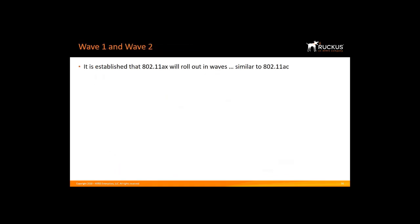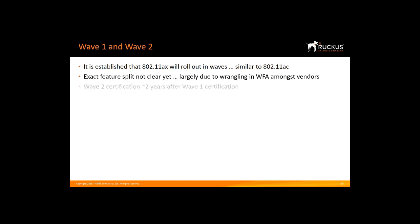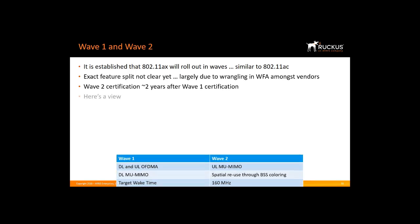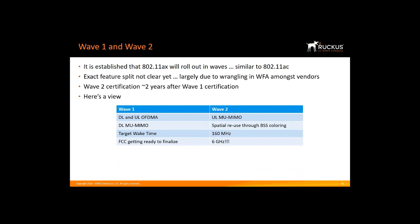802.11ax will roll out in waves similar to 802.11ac. The exact feature split is not yet clear, due largely to wrangling in the Wi-Fi Alliance among various vendors. Wave 2 certification will occur one to two years after Wave 1 certification. Wave 1 will include downlink and uplink OFDMA, downlink multi-user MIMO, target wake time, and hopefully FCC finalization.